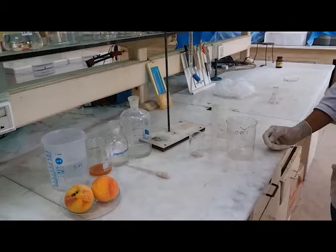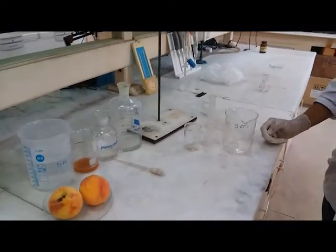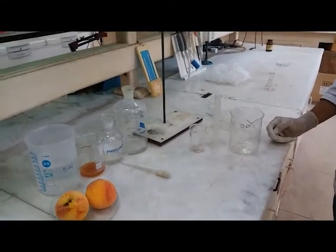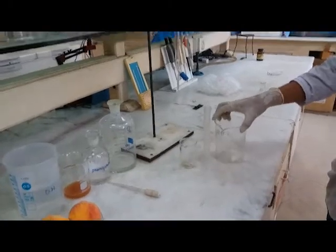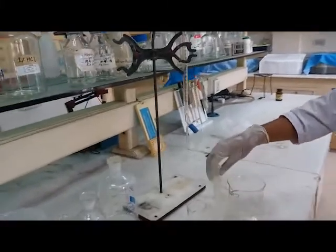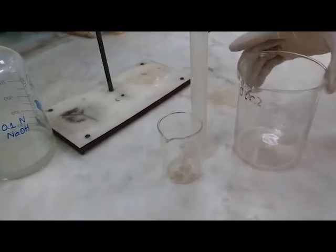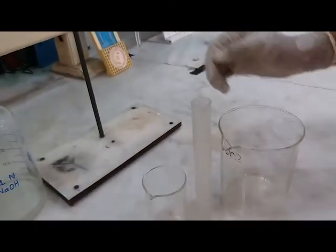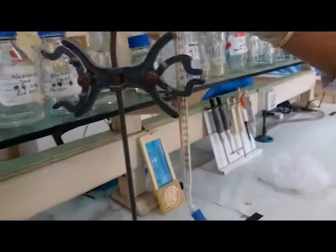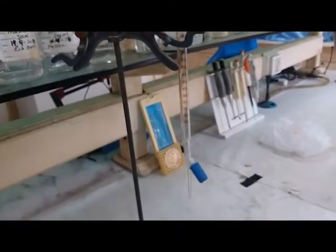The apparatus that is going to be used for this practical: we need a beaker having capacity of more than 250 ml, a small beaker, a measuring cylinder, a burette, a funnel which will be placed on the burette, and a stand for the burette.